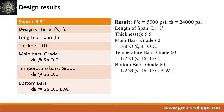Design results are as follows. FC' equals 5,000 PSI. FS equals 24,000 PSI. Length of span: 8 feet. Thickness: 5.5 inches. Main bars, grade 60: 5/8-inch diameter bar at 4 inches on center. Temperature bars, grade 60: 1/2-inch diameter bars at 16 inches on center. Bottom bars, grade 60: 1/2-inch diameter bars at 16 inches on center both ways.